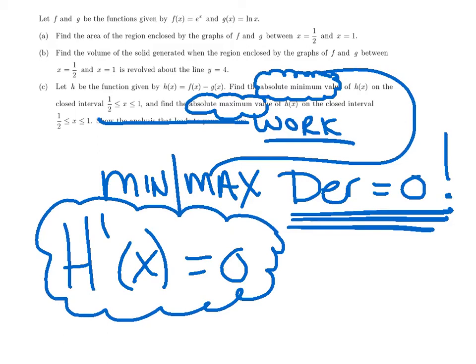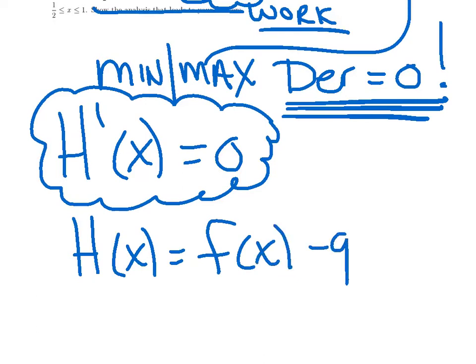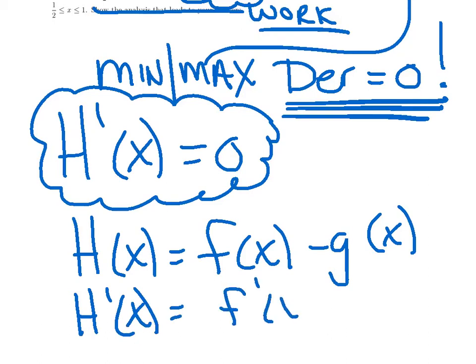All right, now this is very simple. h(x) is nothing fancy. It was just f(x) - g(x). So h(x) = f(x) - g(x). Take its derivative. Maybe you've done that already. h'(x) = f'(x) - g'(x). And show that you're setting it equal to 0.